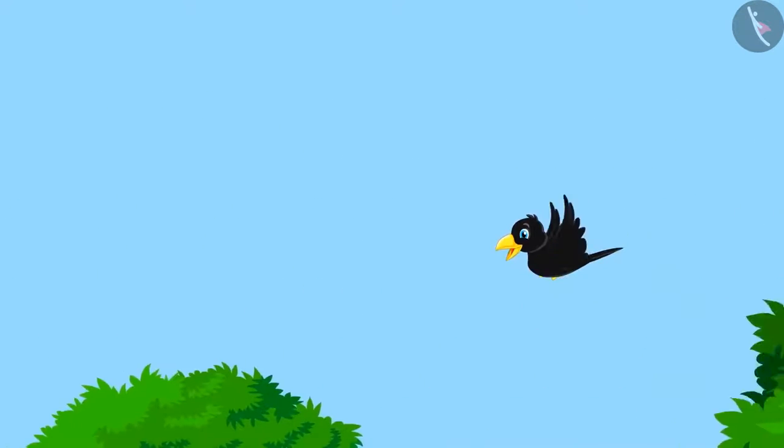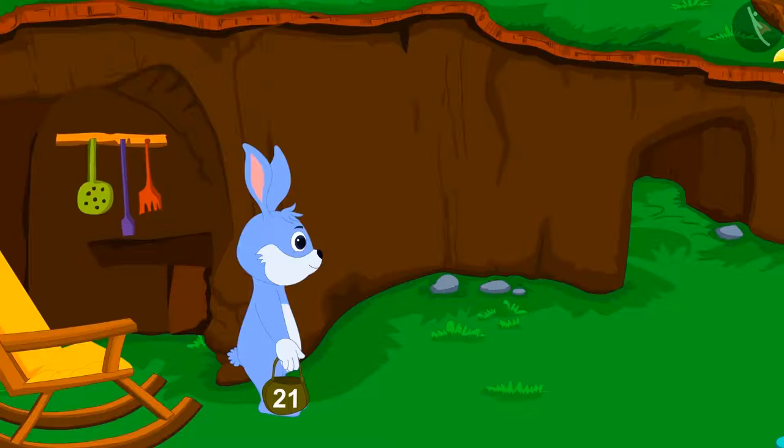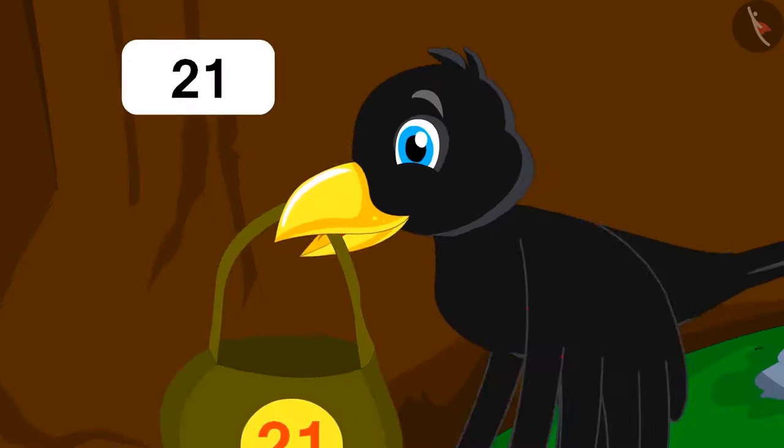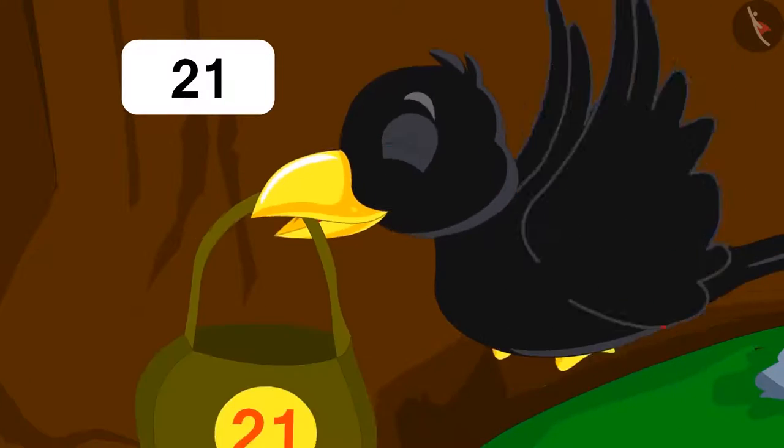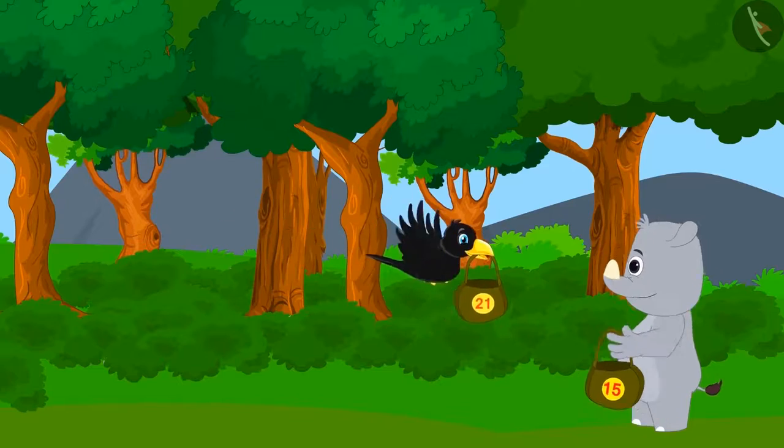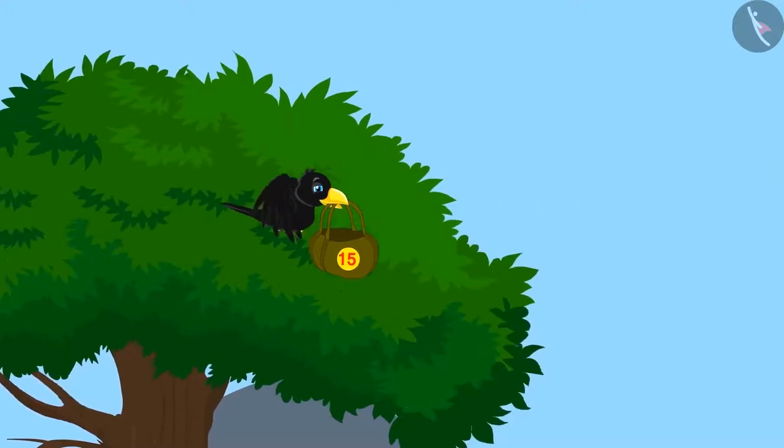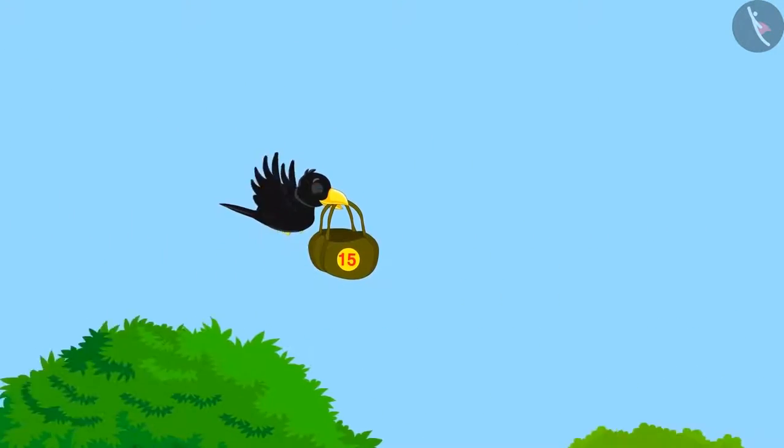The crow set out in search of stones. First, he went to his friend Bunny Rabbit. Bunny gave him 21 stones. Then he went to Gaggoo Hippo, and Gaggoo gave him 15 stones. Can you tell me how many stones in total does the crow have now?